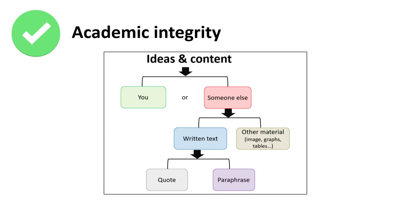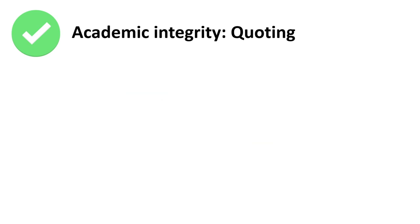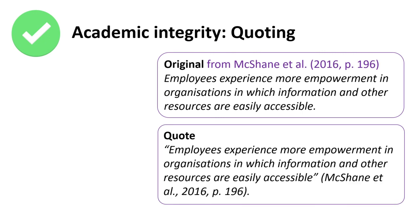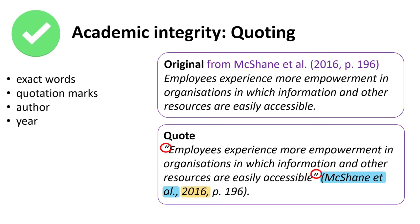When you're writing, your ideas and content will either come from you or someone else. If the information is from you, there's no problem with plagiarism. However, if it's from someone else and is a written text, you have two choices: you can either quote or paraphrase. Quoting is one way to use other people's words and ideas with integrity. Copy the exact words and put them inside double quotation marks, then give the author's surname, year of publication, and page number where the words are from.